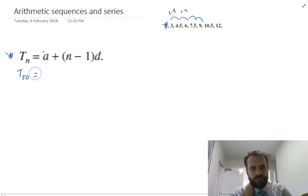That's going to be equal to a, which is the first number. In this case, the first number is 3, plus n, which is the nth term, the number of terms I want.